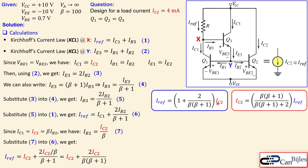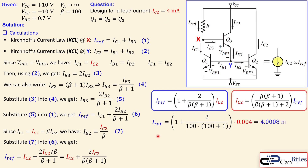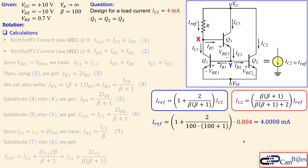We can flip the equation to express IC2 in terms of IREF. The ratio approaches 1 as beta becomes large. Using beta = 100 and the desired load current of 4 milliamps, the required reference current is approximately 4.0008 milliamps — just 0.8 microamps larger than the load current.